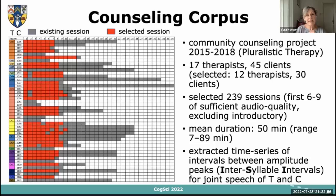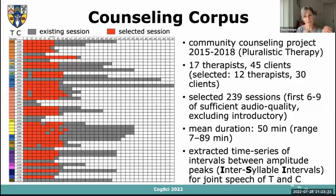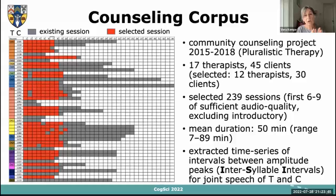We were lucky enough to get access to a counseling corpus — a set of recordings from a community counseling project conducted between 2015 and 2018, done in the context of counselor training within a pluralistic therapy framework. Overall, there were 17 therapists counseling 45 clients. Therapists had different numbers of clients and clients attended for different numbers of sessions. We selected a roughly uniform amount of sessions per client, accounting for audio quality, ending up with 12 therapists and 30 clients. Mean session duration was 50 minutes, ranging from 7 to 89 minutes.